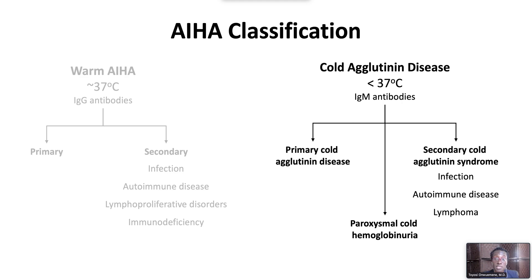Paroxysmal cold hemoglobinuria is an acquired hemolytic anemia that is typically seen in children following a viral infection. It is caused by an IgG autoantibody that fixes complement in the cold and, upon rewarming, causes intravascular hemolysis and hemoglobinuria.